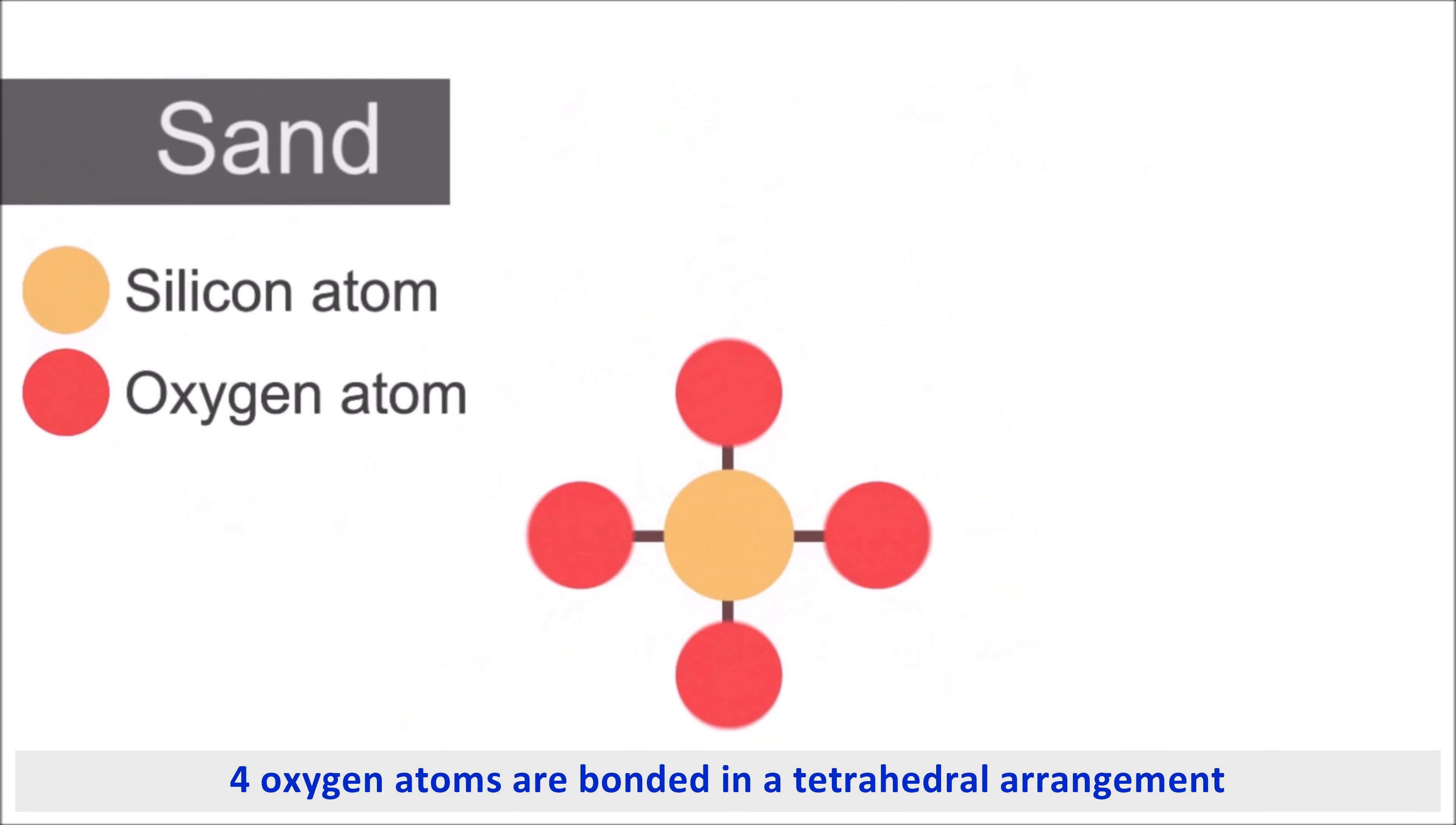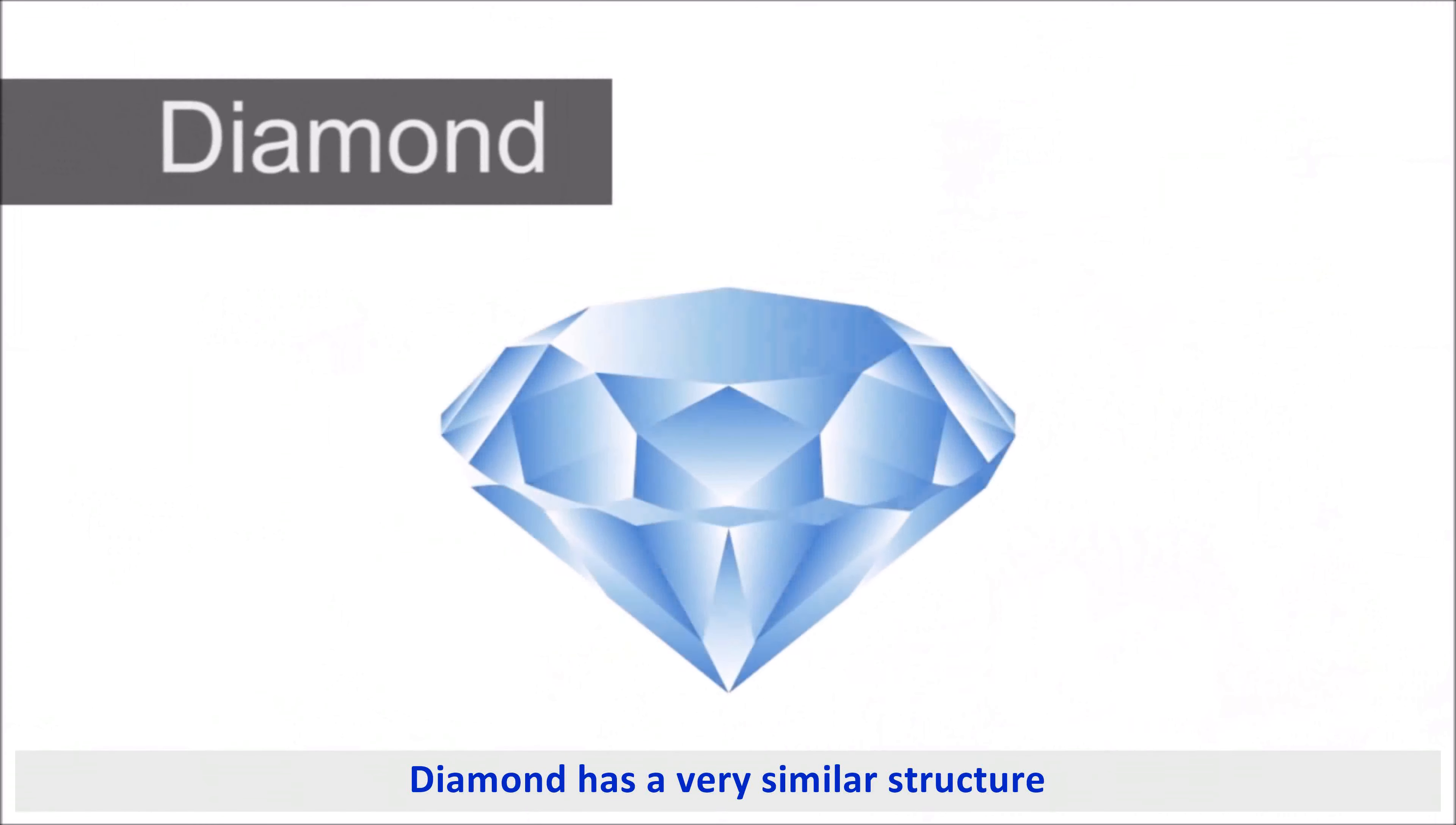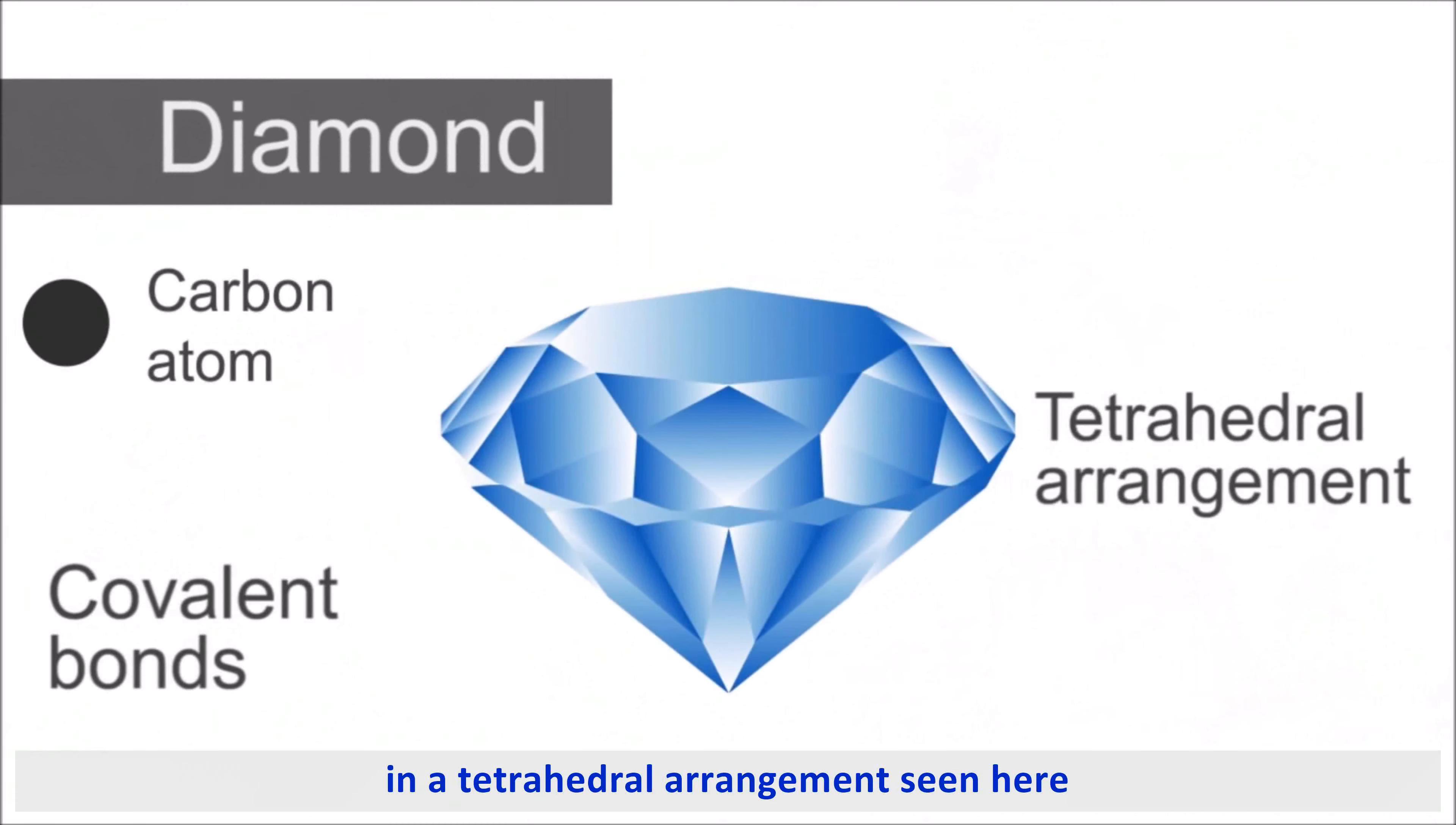Sand contains silicon atoms covalently bonded to oxygen atoms. Four oxygen atoms are bonded in a tetrahedral arrangement around each silicon atom. Diamond has a very similar structure, where all of the carbon atoms are joined by covalent bonds in a tetrahedral arrangement.